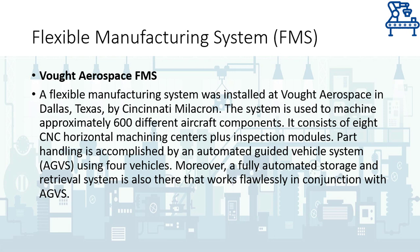The FMS installed at Watt Aerospace is used to machine approximately 600 different aircraft components. It consists of eight CNC horizontal machining centers plus a few inspection stations. Part handling is done by a fully automated guided vehicle system using four vehicles only. Loading and unloading is done at two stations through storage carousels in which parts are stored in pallets so that AGVs can easily transfer parts from any location to the desired location. The system is also capable of producing a single one-of-a-kind part in continuous mode instead of producing multiple parts in batch mode.